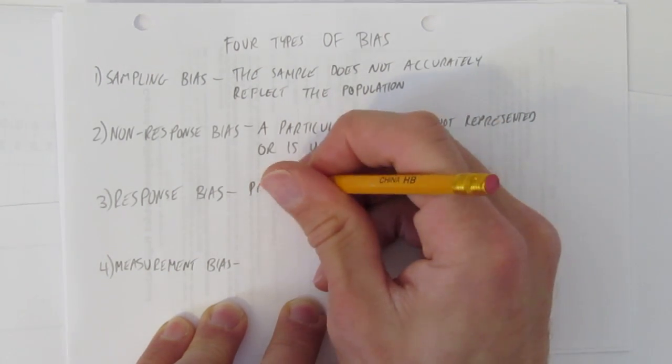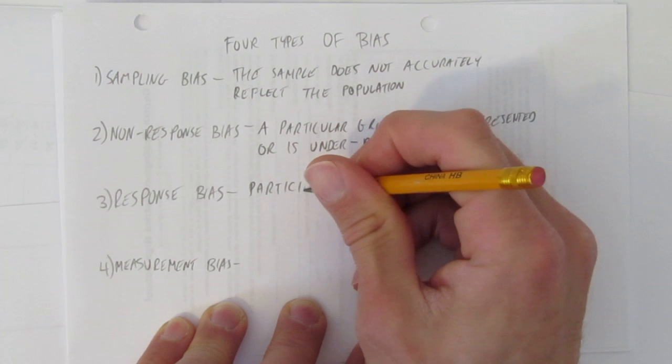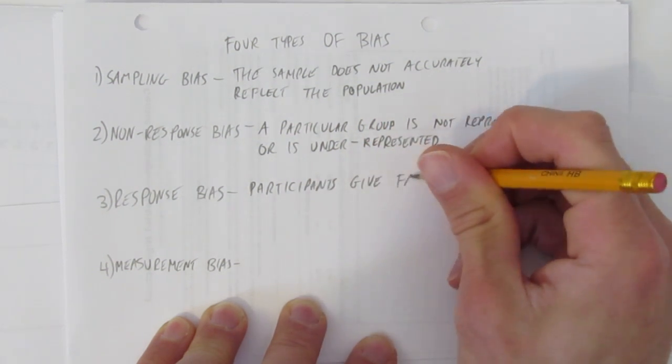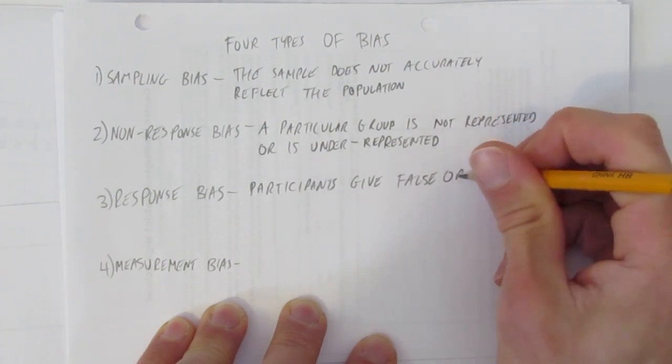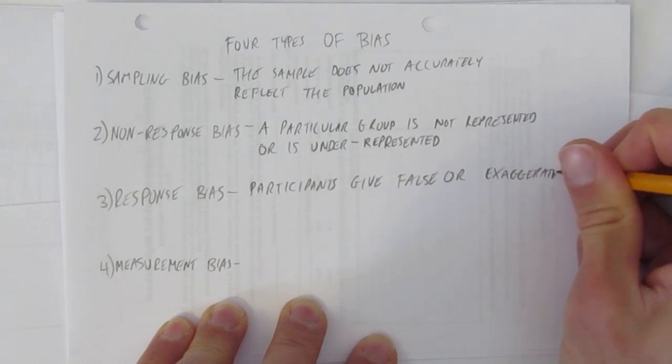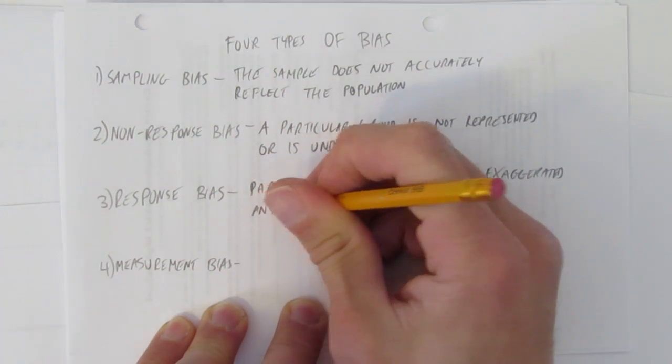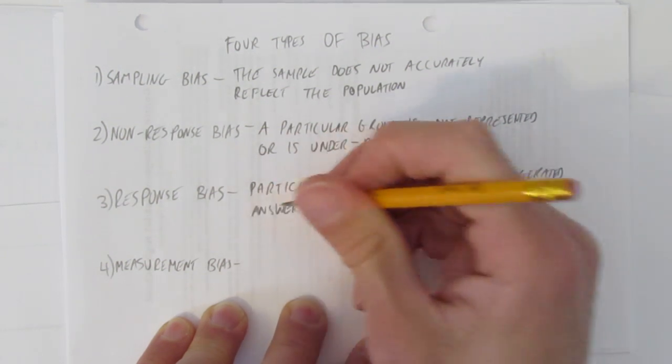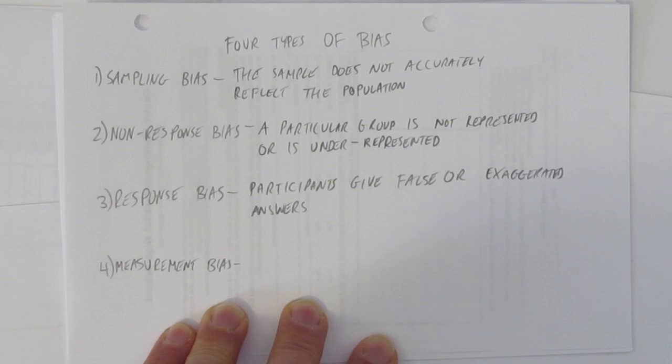The third type of bias is response bias. This is when participants give false or exaggerated answers. Response bias can happen when you ask a question that touches on pride or other factors where they might be embarrassed.